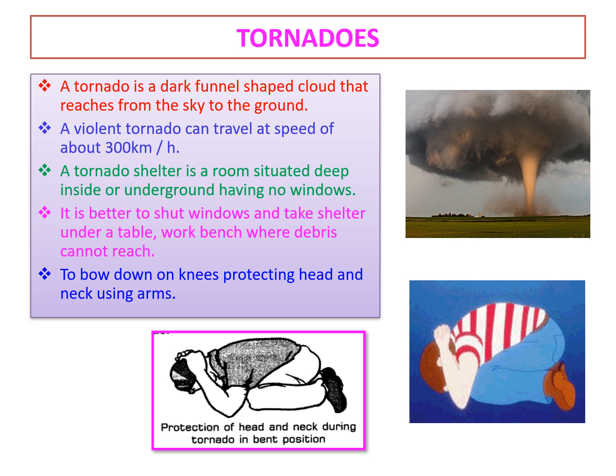One more safety measure: one has to bow down on knees, protecting the head and neck using arms. I have shown the diagram on the screen showing how to do this. We have to catch our head with our arms. This is how we take safety measures at the time of a tornado.